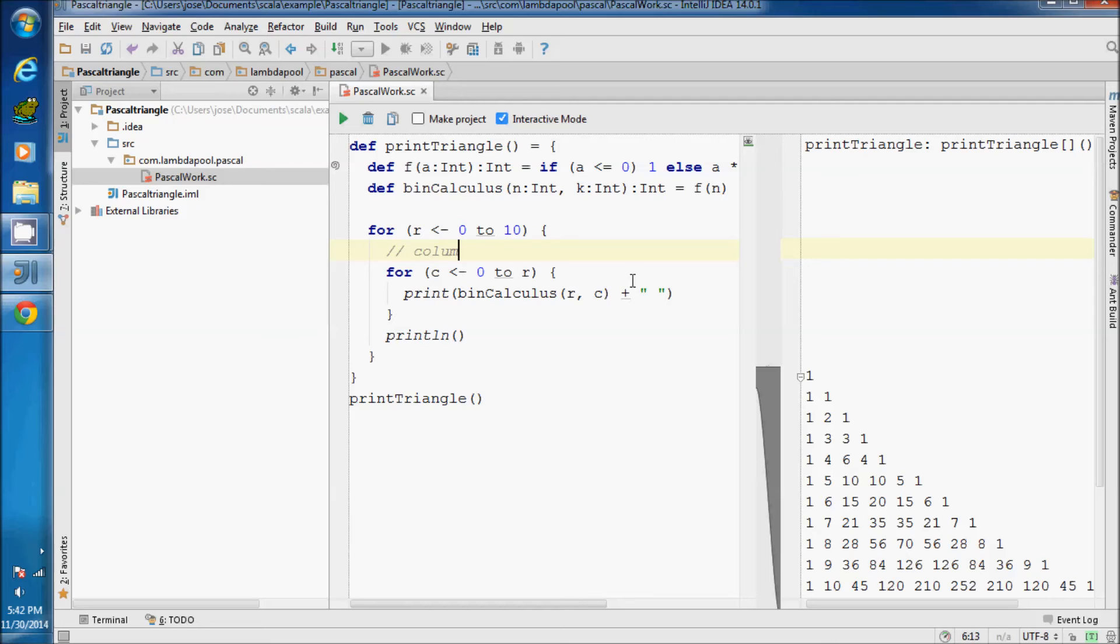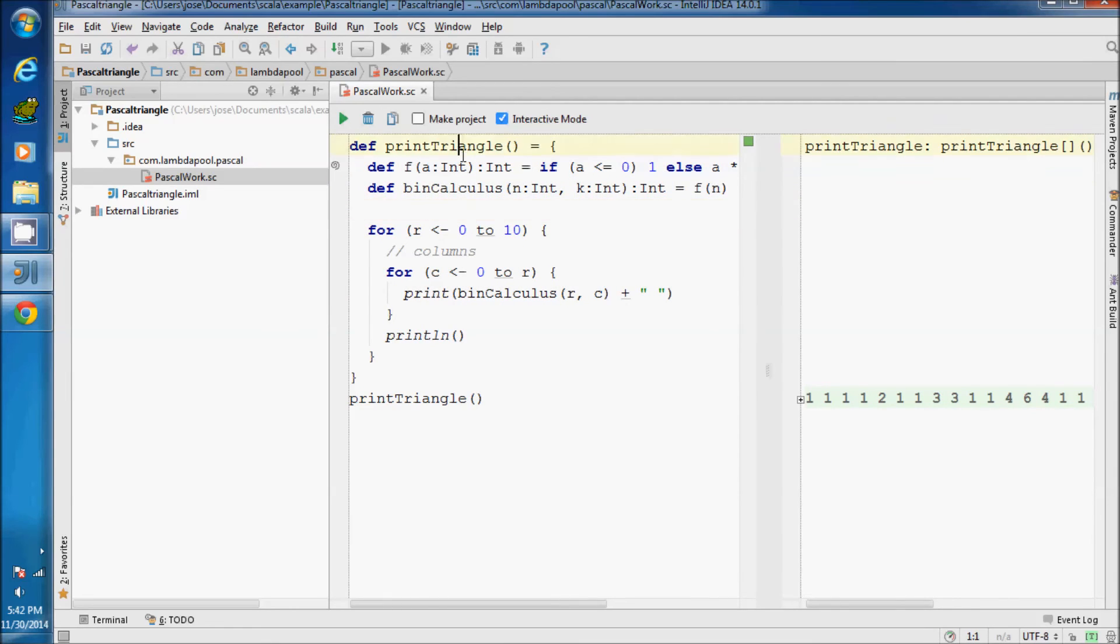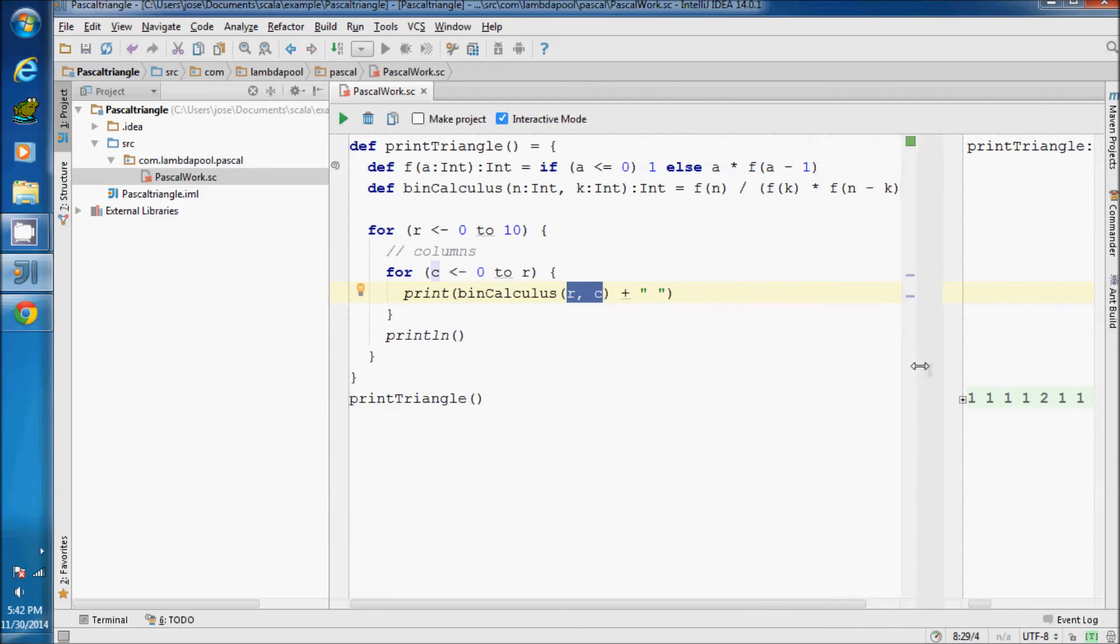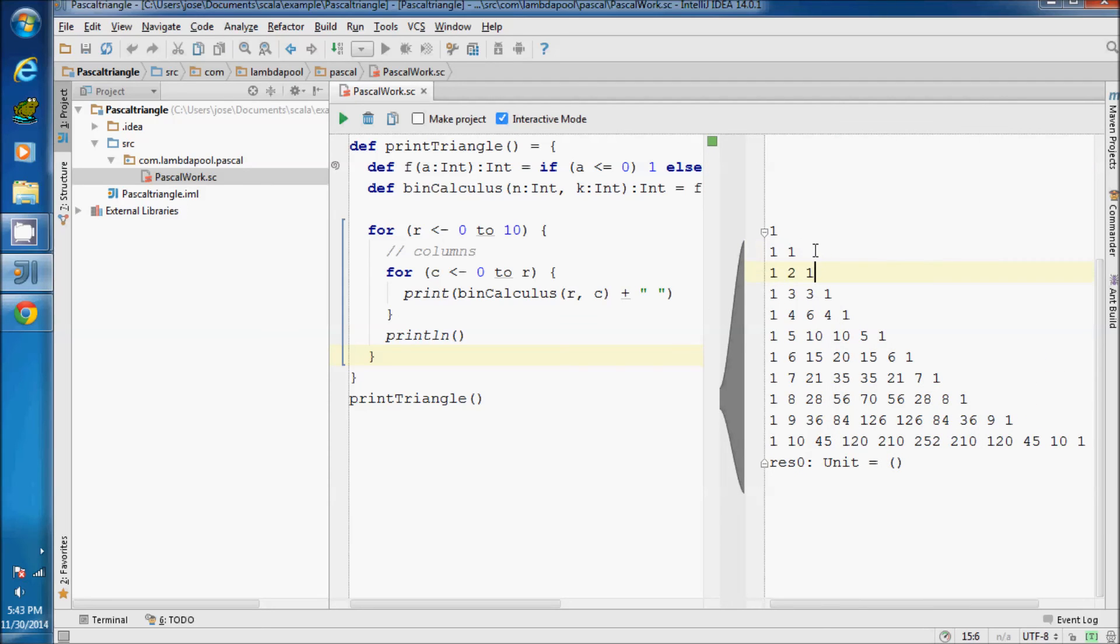This is for printing columns and we invoke the bin calculus in here. It's an inner function for the print triangle, passing the row and the column. It will calculate using the binomial formula what is the position that I need and print it. Here we add some space. This println at the end will just add the new row, breaking to another row.